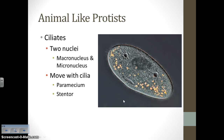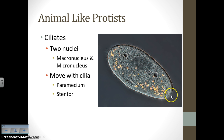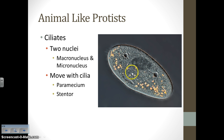Some protists, like paramecium and stentor, are covered in tiny little hairs called cilia, so they belong to a group called ciliates. Every ciliate — and paramecium is the one you're responsible for knowing — will have a large structure called a macronucleus and a smaller nucleus structure called a micronucleus.